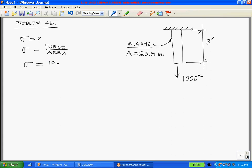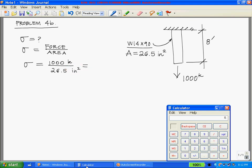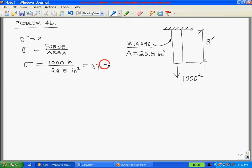Our force is 1000 kips, our area is 26.5 inches squared. Put that through our calculator: 1000 kips divided by 26.5 equals 37.736 kips per square inch. Always double check your units.